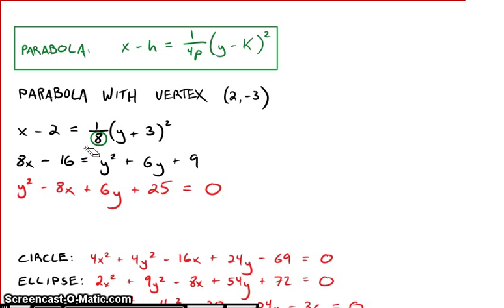To get rid of that 1/8, we're going to multiply both sides by 8. The 8 and the 1/8 just cancel out and we're left with (y + 3) squared. (y + 3) squared is this perfect square trinomial. The left side becomes 8x - 16. Nothing too crazy there. Combine like terms.